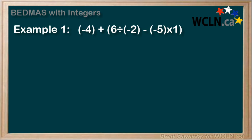So let's jump right in. Example 1: negative 4 plus in brackets 6 divided by negative 2 minus negative 5 times 1. Now we notice that there are a lot of brackets here and sometimes we use brackets so that the negatives in a number aren't that confusing. For example, if we didn't have brackets here we would see a divided and a minus sign side by side. Now that would be confusing.